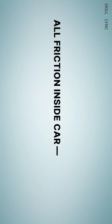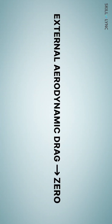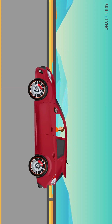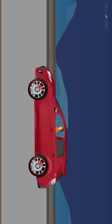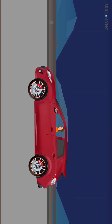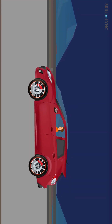Let's assume that all the values of friction between the components inside the car is zero. Let's also assume that the external aerodynamic drag on the car is also zero. Now that we've removed all the forces that could cause the car to stop, it should coast on the road indefinitely, right?